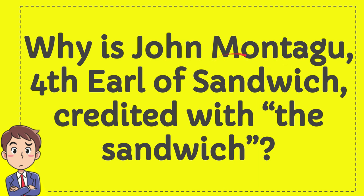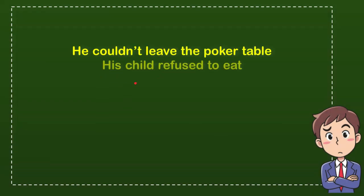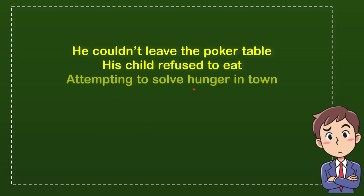What is John Montagu, Fourth Earl of Sandwich, credited with the sandwich? Now I'll give you a list of options. The very first one is he couldn't leave the poker table. The second option is his child refused to eat.